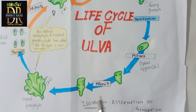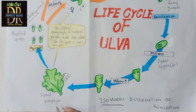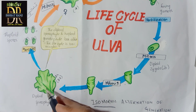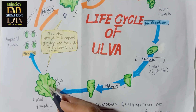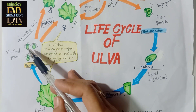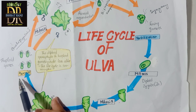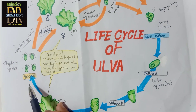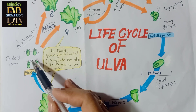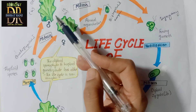The life cycle of Ulva starts from the sporophyte. The sporophyte is diploid, having 26 chromosomes. The sporophyte produces haploid spores — the whole plant turns into haploid zoospores, which are quadriflagellated with four flagella each. These spores are formed by meiosis, so the chromosome number is reduced to half: from 26 in the sporophyte to 13 in each quadriflagellated spore.